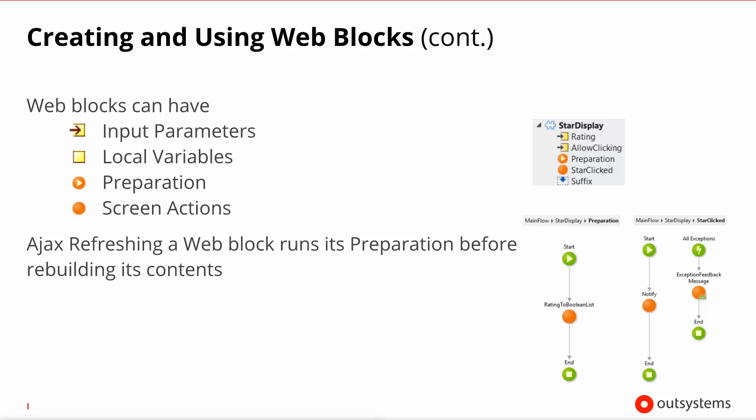If you look at the preparation and screen actions associated with a block, you will notice that there are no output parameters. This begs the question: how can the screen that includes a block be made aware of any interaction that the user has with this block?